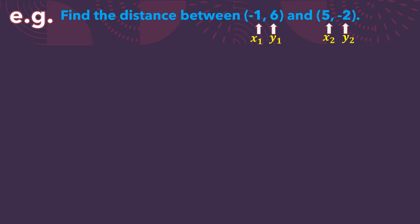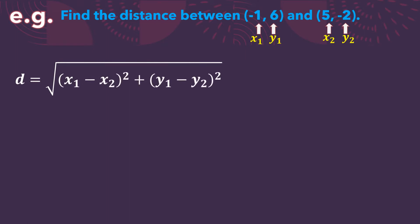Let us now find the distance using the formula: d equals the square root of (x₁ minus x₂) quantity squared plus (y₁ minus y₂) quantity squared. We substitute the values from our problem. For x₁ and x₂ we have negative 1 and 5, while for y₁ and y₂ we have 6 and negative 2.